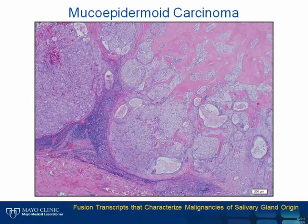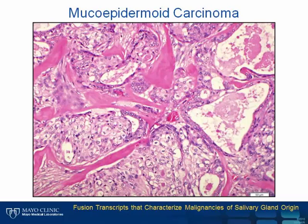Mucoepidermoid carcinoma is the most common malignant salivary gland tumor in both pediatric and adult populations. Although typically observed in the major salivary glands, it is occasionally seen in minor salivary gland sites as well. The classic cellular constituents are mucus, epidermoid, and intermediate cells. The proportion of each cell type varies widely, and several morphologic variants exist, such as oncocytic, sclerosing, cystic, and clear-cell mucoepidermoid carcinoma. Differential diagnostic considerations range from benign to malignant lesions: necrotizing sialometaplasia, inverted ductal papilloma, cystadenoma, lymphoepithelial cysts, oncocytoma, adenosquamous carcinoma, and salivary duct carcinoma.